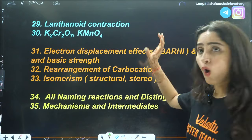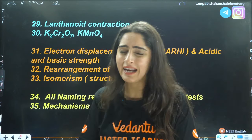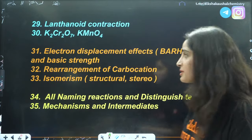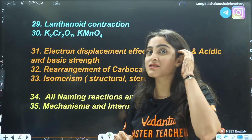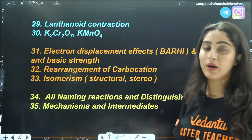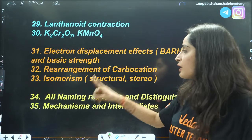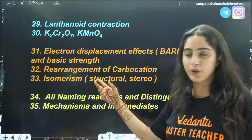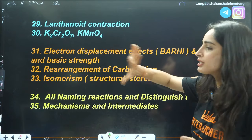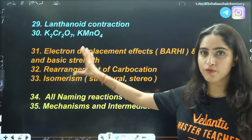Next is organic chemistry. The fundamentals are electron displacement effects, acidic and basic strength, and GOC (General Organic Chemistry) in detail — all effects and examples. Also very important is rearrangement of carbocations, used in many questions where answers depend on carbocation stability, including ring expansion and contraction. Additionally, isomerism — structural and stereoisomerism — in detail. Once your basics are clear, most questions from haloalkanes, haloarenes, alcohols, and other chapters will be answerable.